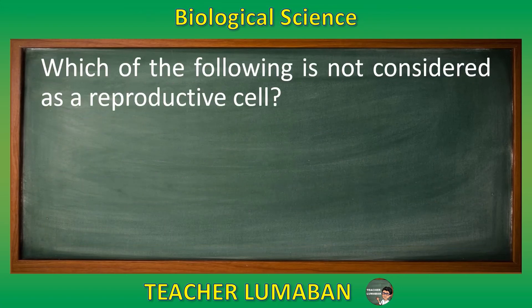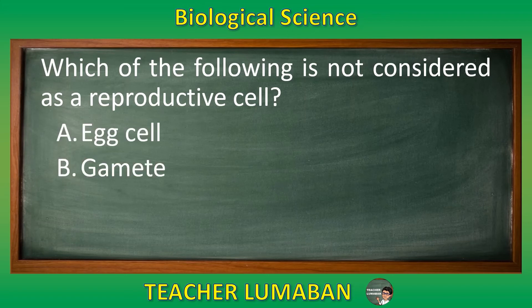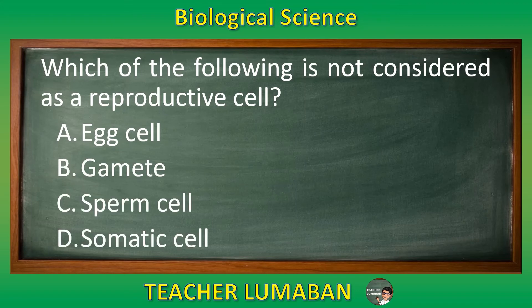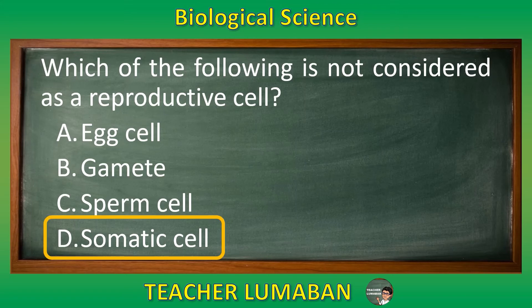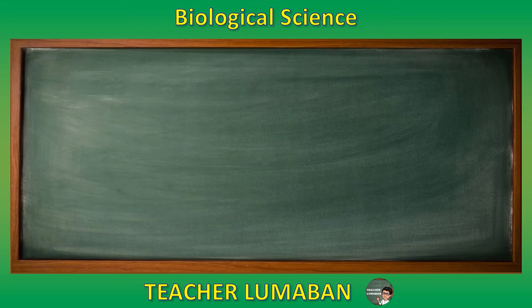Which of the following is not considered a reproductive cell? Letter A: egg cell. Letter B: gamete. Letter C: sperm cell. Letter D: somatic cell. Choose the suitable answer based on the given choices in 5 seconds. 5, 4, 3, 2, 1. The correct answer is Letter D, somatic cell. The somatic cell is not considered a reproductive cell.